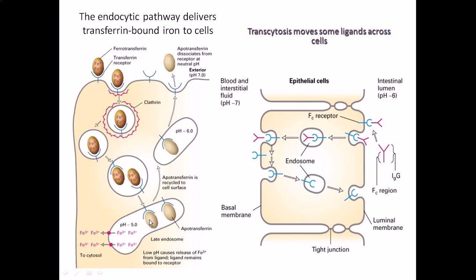At a pH of less than five, the ferrotransferrin proteins become apotransferrin, and the irons are released from those proteins. Each protein contains two iron atoms held within the protein structure. The irons come out of the late endosome into the cytosol — that is how a cell obtains iron. It takes iron through receptor-mediated endocytosis via a protein molecule, not via channel transport — a slightly unique but important pathway.